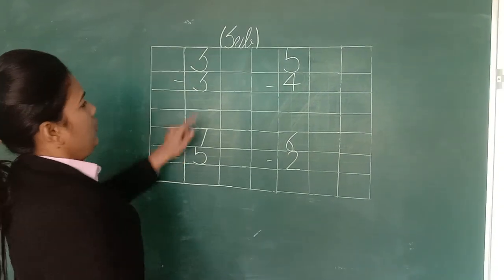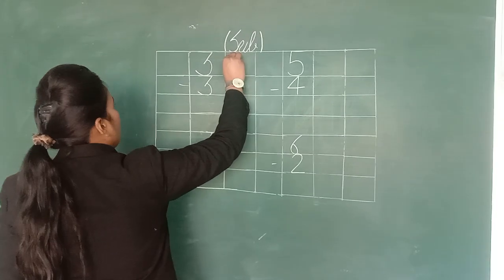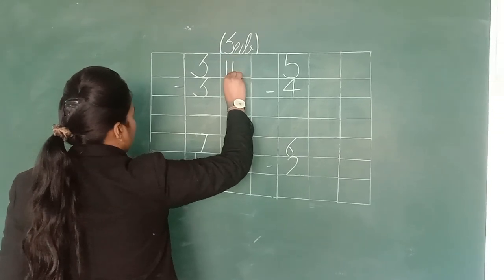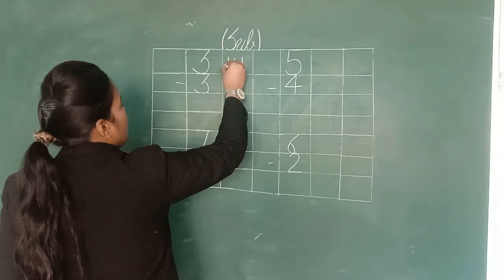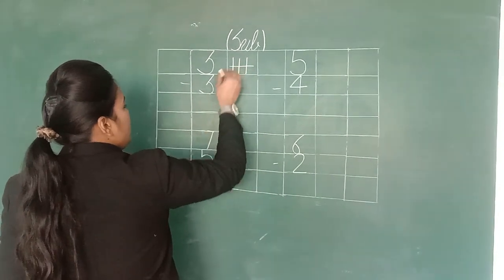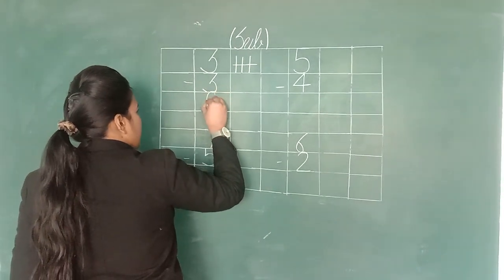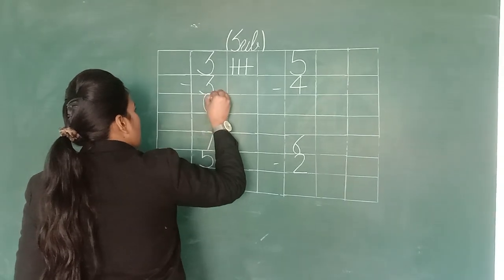So first digit is 3. I'll draw 3 lines, 1, 2, 3. Now cut 3 from these. If we cut 3 from 3, what's left is 0. So 3 minus 3, answer is 0.